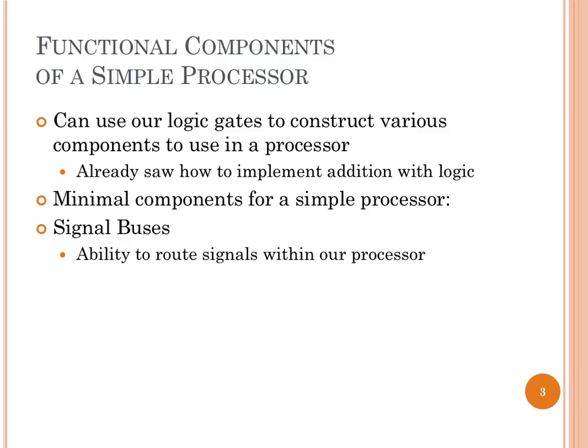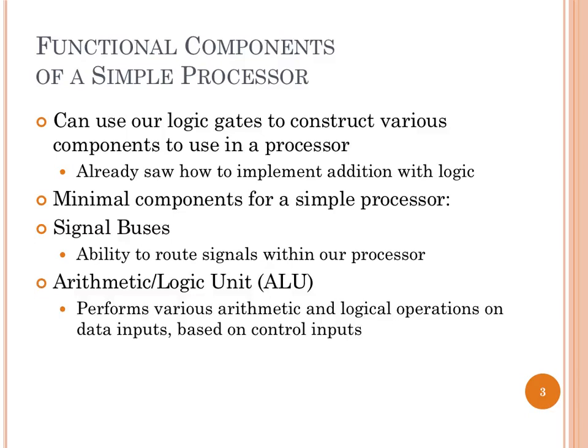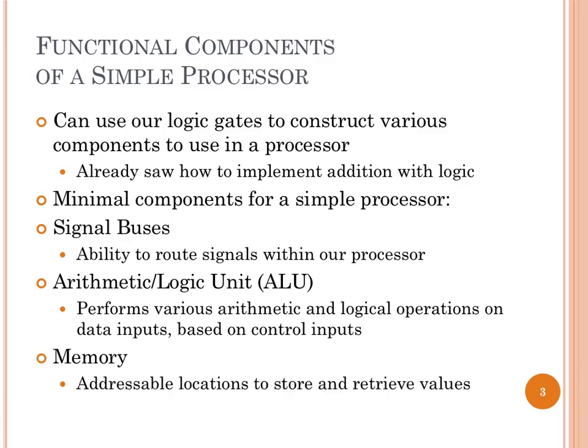We need a few things beyond addition. First, signal buses — a way of moving values from one place in the computer to another, basically just a bunch of wires. Second, an arithmetic logic unit (ALU) — a function that takes data inputs plus a control input specifying what to do, and computes an output. Third, memory — a way of remembering things so we can refer to them later, which is critical because our instructions are simple and need to communicate through stored results.